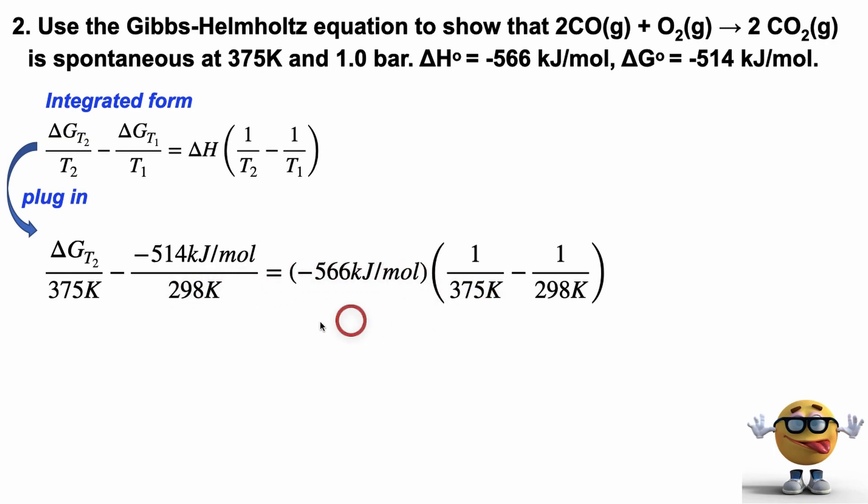Okay. We plugged in the enthalpy change and the other temperatures. And if we solve for delta G, we get a value of negative 501 kilojoules per mole. It's negative. It was originally negative. It's still negative. Which means that the reaction is spontaneous. So the entropy change is greater than zero.